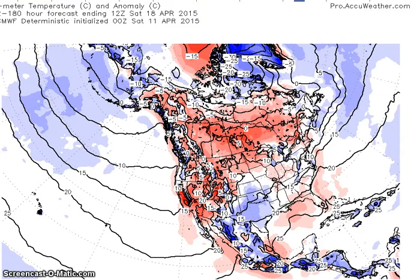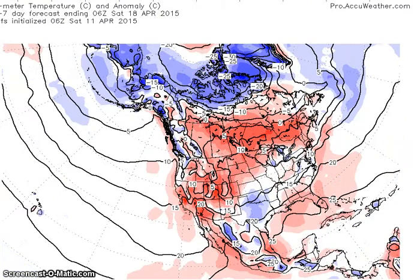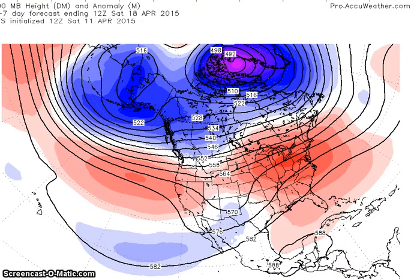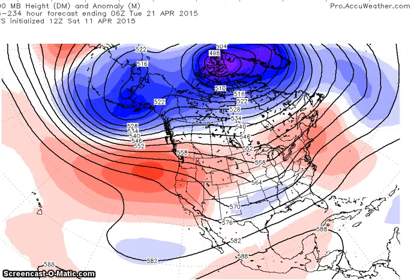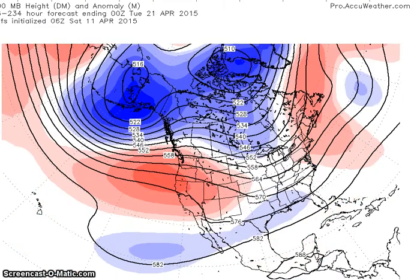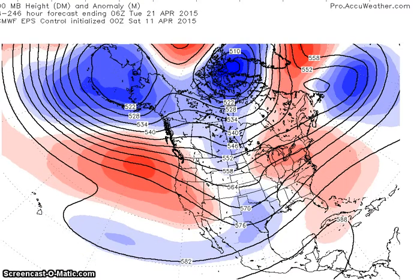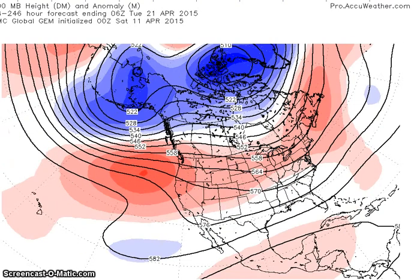We're going to look now at the period for April 17th to the 21st. The models are still indicating a little change with a weak trough up across the southwest. Then going to the end of this period, you can see a little change in the circulation.